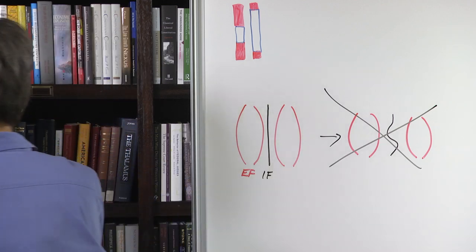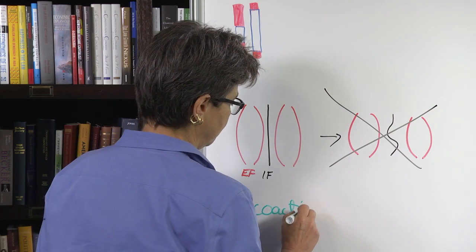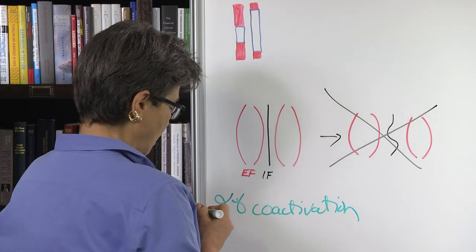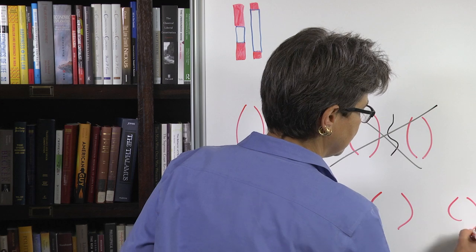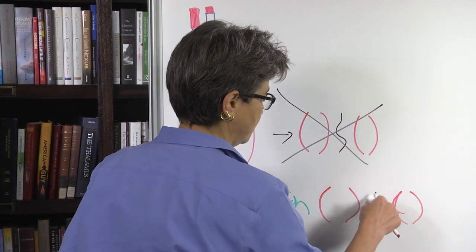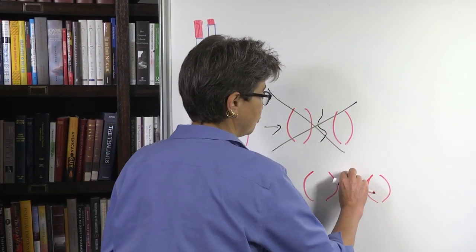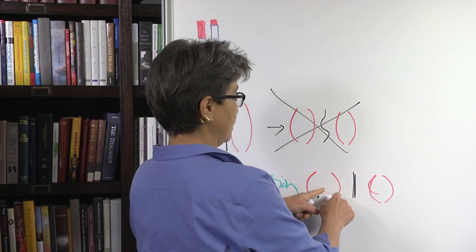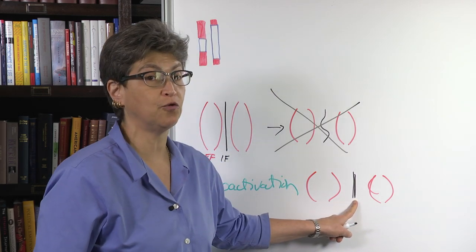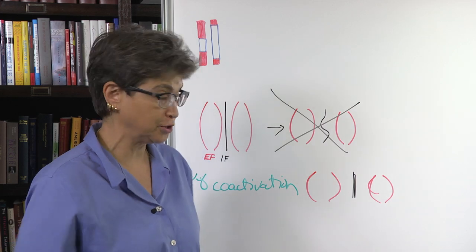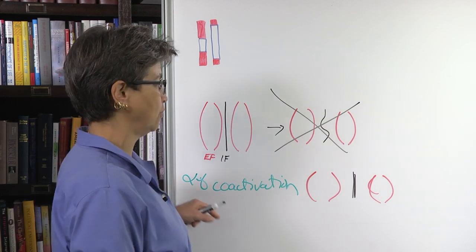Instead what we get is called alpha-gamma coactivation, and that means nothing to you, but it's going to mean something to you in one second. And what happens is that as the extrafusal fibers contract, so does the intrafusal fiber. Okay? And it contracts because the polar regions contract. So now if a stretch comes along now, this intrafusal fiber is now going to be informative. It will be stretched, and it will give us information. Great. How did we get that? Well, we got that through alpha-gamma coactivation.